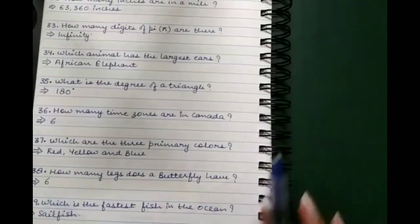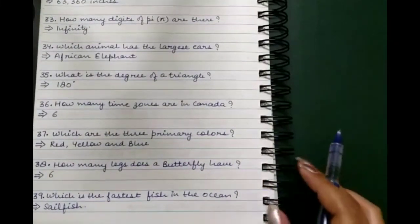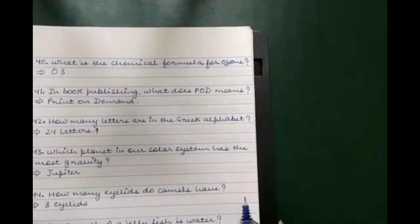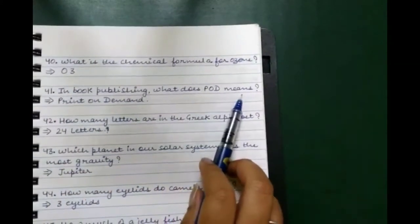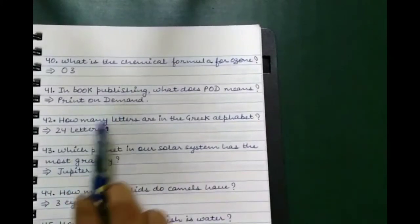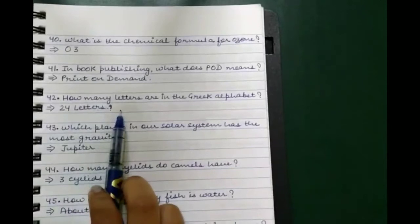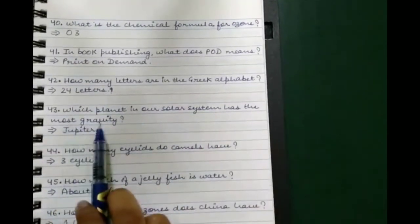Which are the three primary colors? Red, yellow, and blue. How many legs does a butterfly have? Six. Which is the fastest fish in the ocean? Sailfish. What is the chemical formula for ozone? O3. In book publishing, what does POD mean? Print on demand.